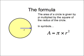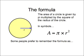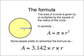In symbols, area equals pi times r squared. Some people prefer to remember the formula as area equals 3.142 times radius times radius. A lot of people forget that r squared is r squared and treat it as twice r, which of course is wrong.